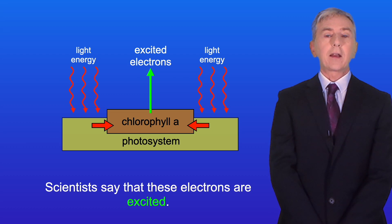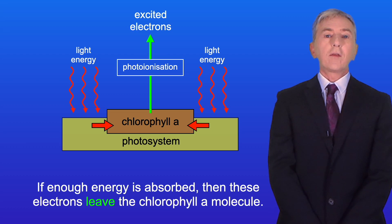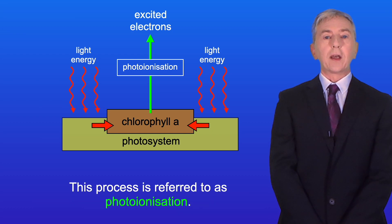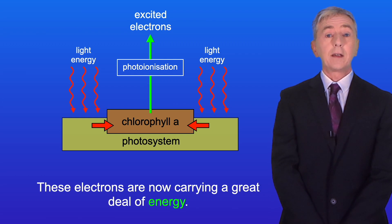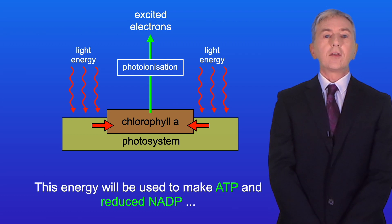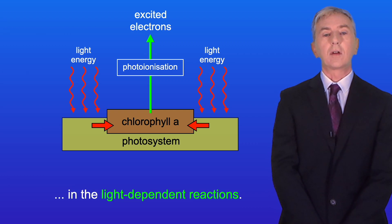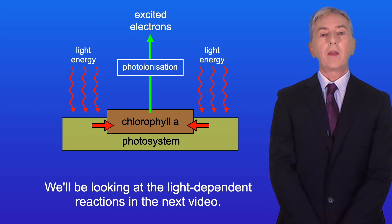Scientists say that these electrons are excited. If enough energy is absorbed then these electrons leave the chlorophyll A molecule, and this process is referred to as photoionization. These electrons are now carrying a great deal of energy. This energy will be used to make ATP and reduced NADP in the light dependent reactions, which we'll be looking at in the next video.